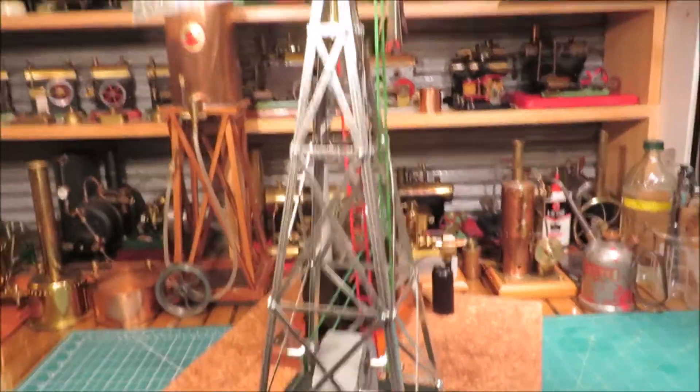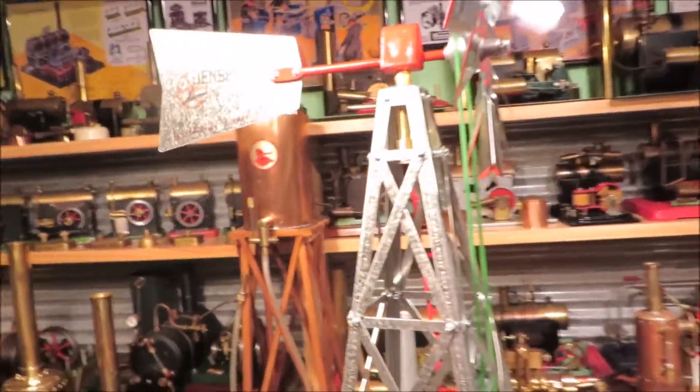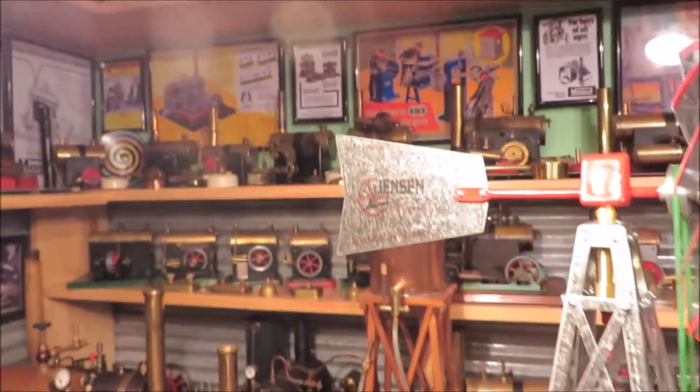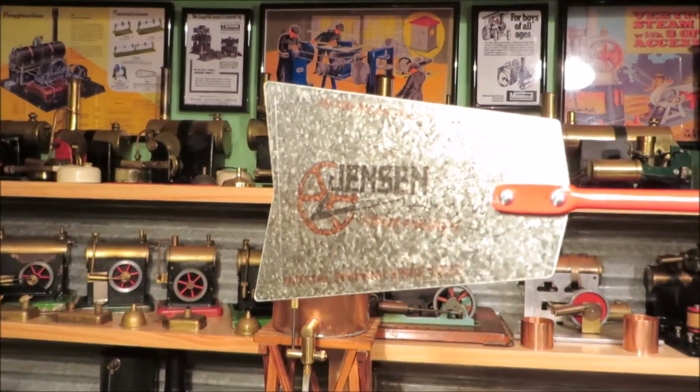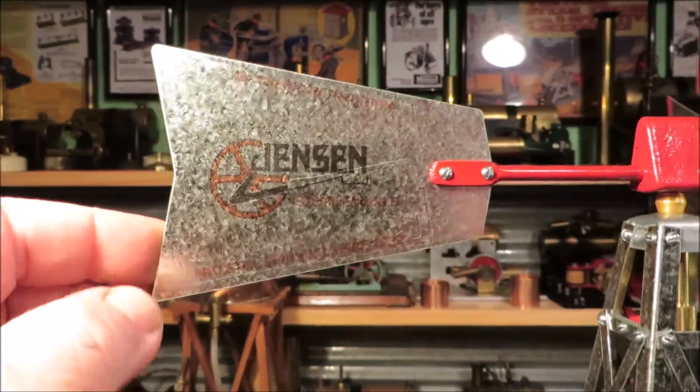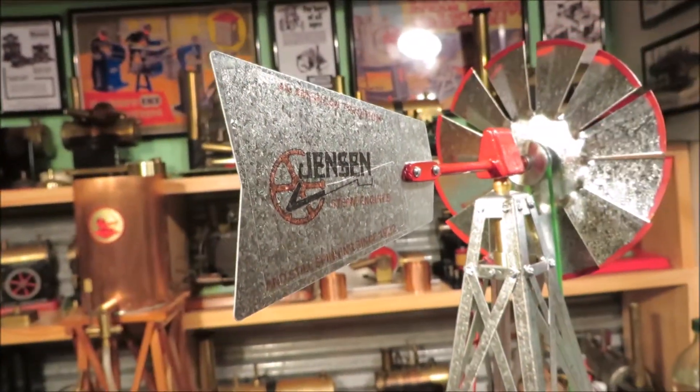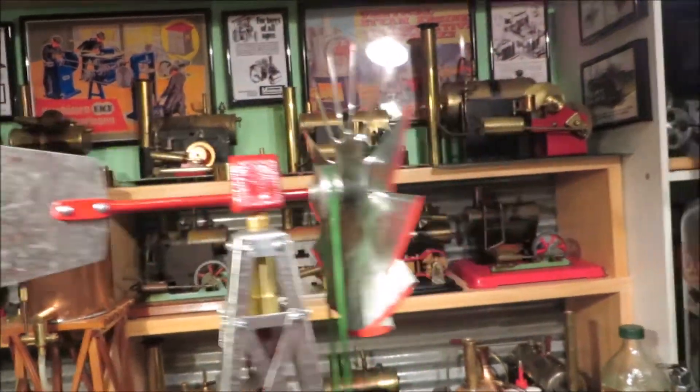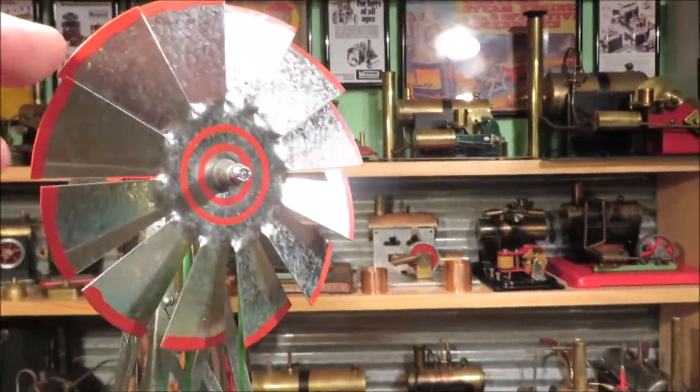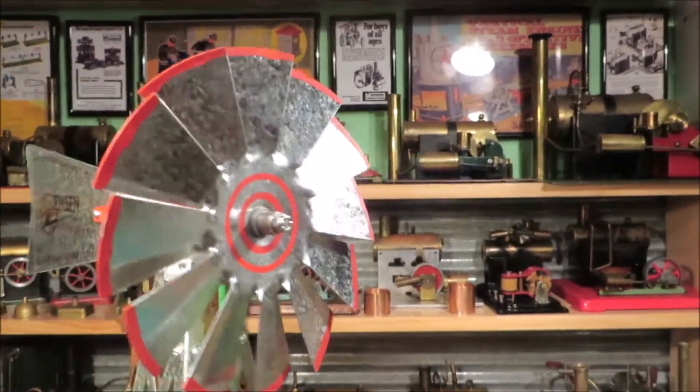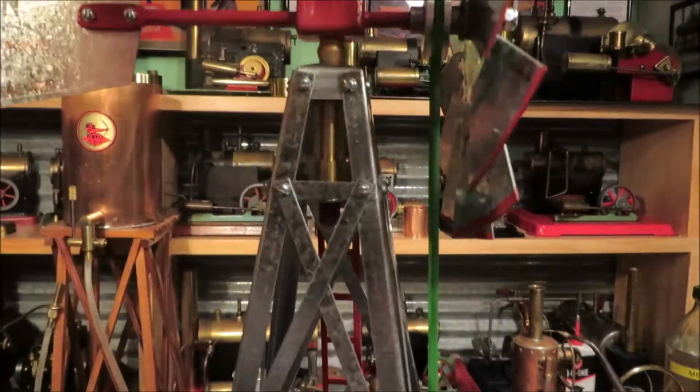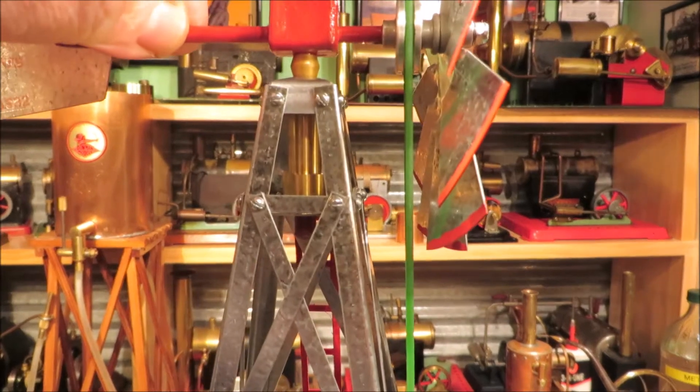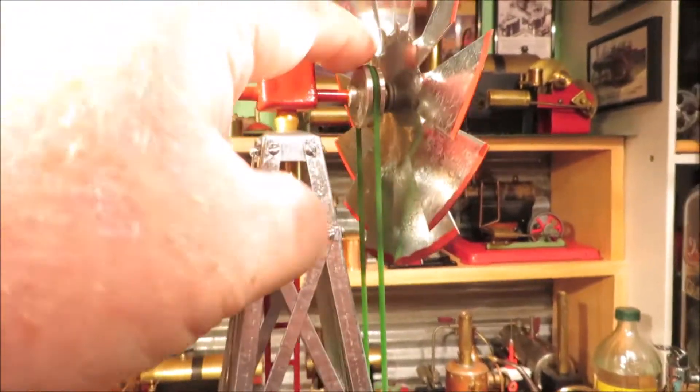As Bruce is a crazy Jensen guy, he made me up some Jensen water slide transfers that I'll put on the tail of the windmill. I've also painted the tips of the windmill red. I've made this brass manual in there which has locked this down so this can't turn anymore. I've made a pulley here out of aluminum.